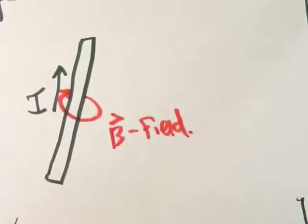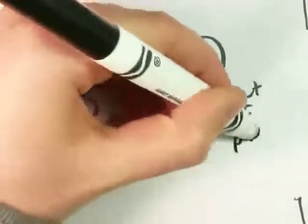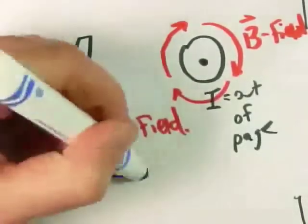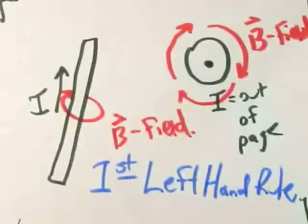And so he tried to explain it. We've got a current going through a wire. It's maybe a magnetic field that's causing that compass to change. And he decided to have a way of figuring out that change. He called it the first left-hand rule.